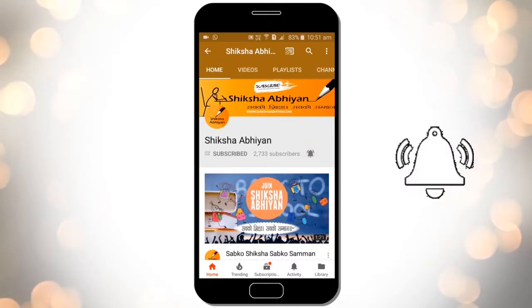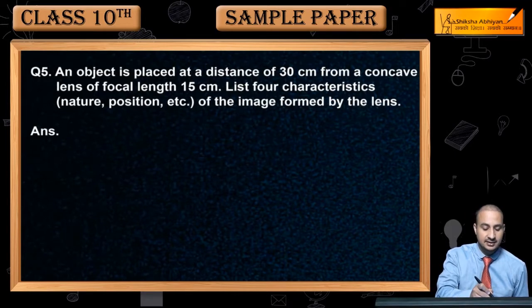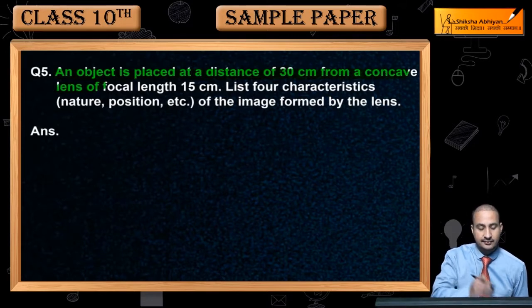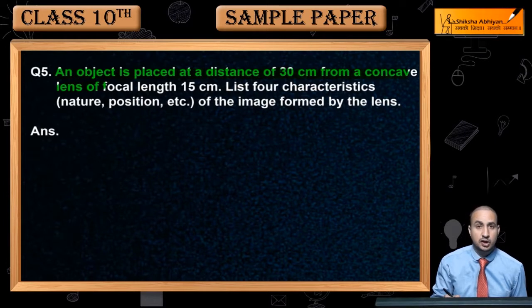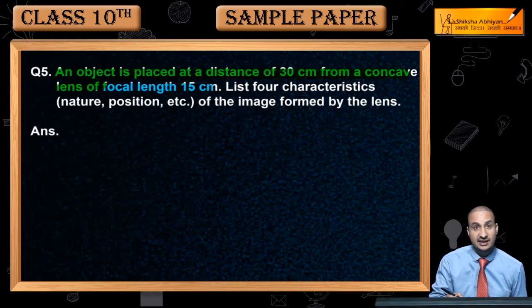Now see question 5. An object is placed at a distance of 30 centimeter from a concave lens. The focal length is 15 centimeter.